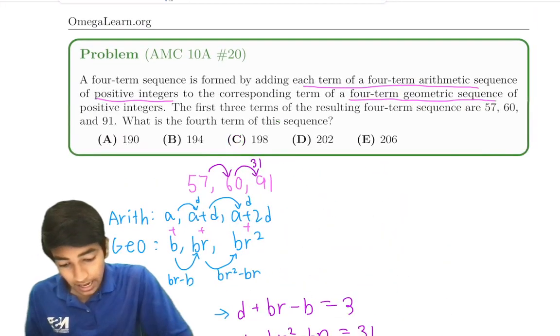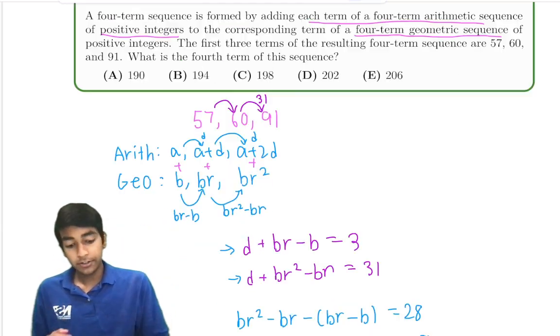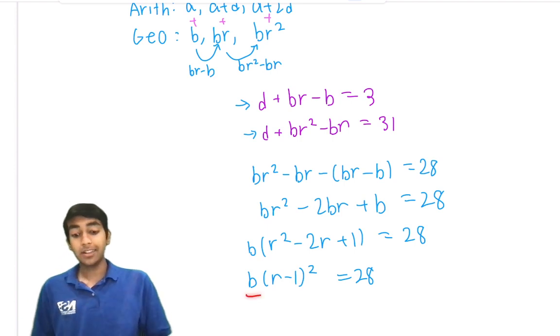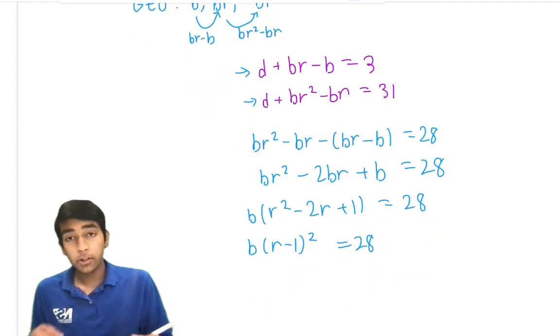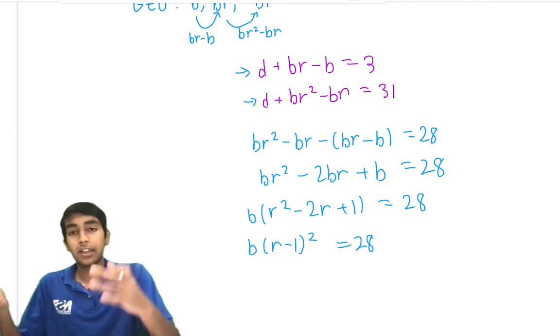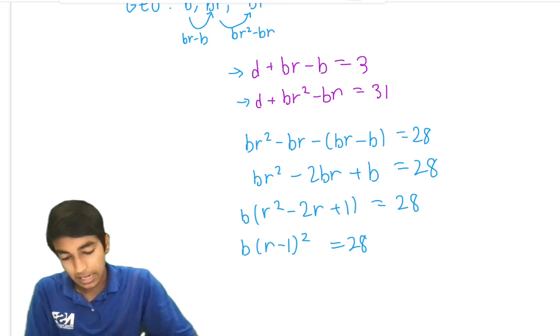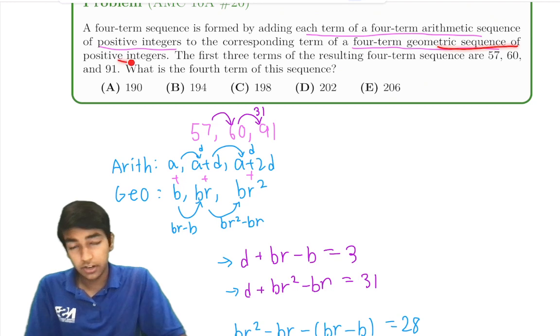But the main thing here is that it's a sequence of positive integers. A sequence of positive integers must have the first term be a positive integer, and the common ratio must also be a positive integer. Because if it was a fraction, then it wouldn't necessarily satisfy the geometric sequence of positive integers.